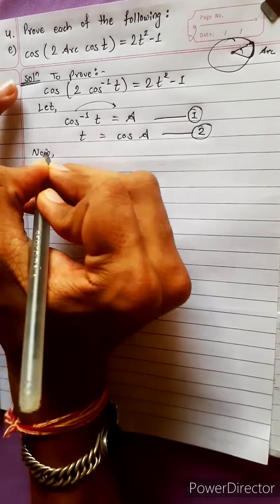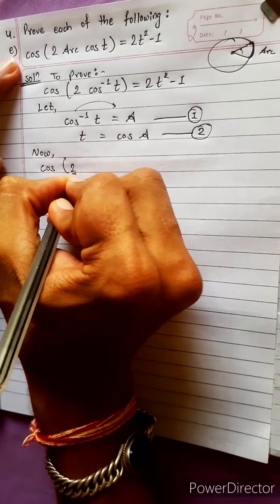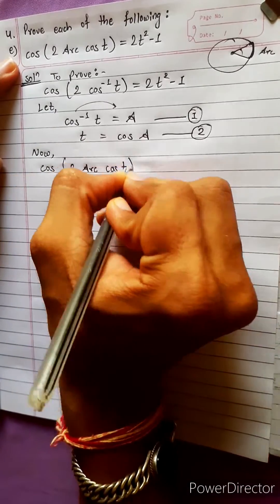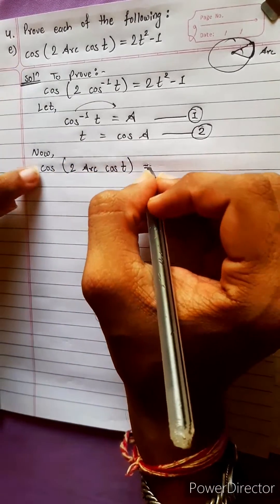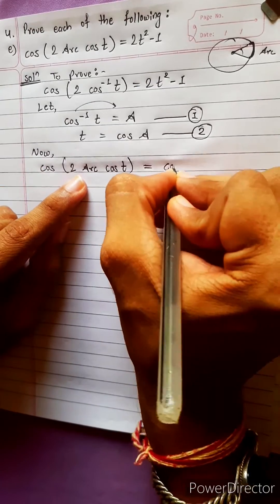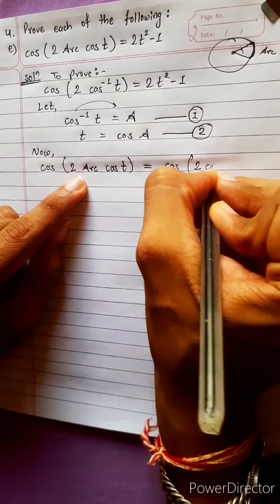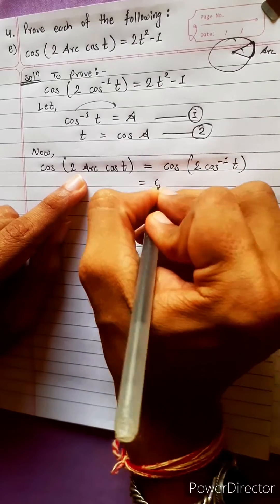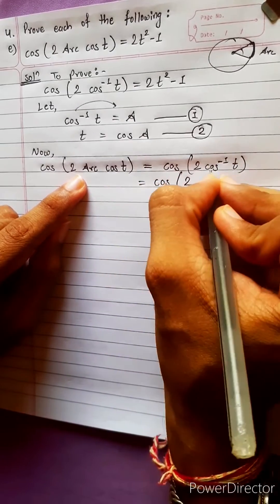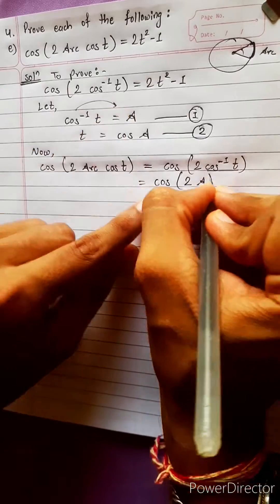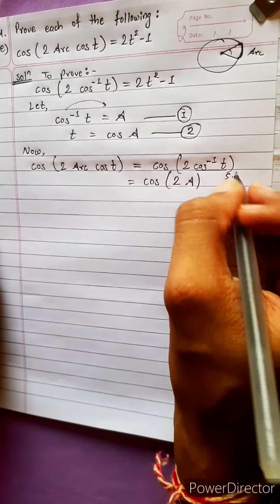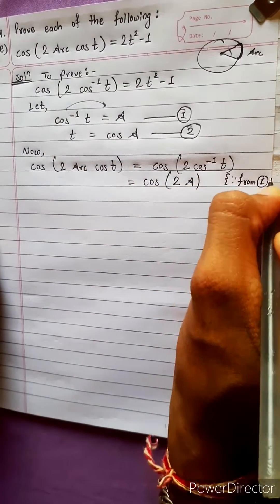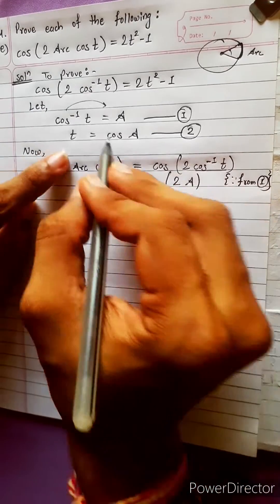Now, according to the question: cos 2 arc cos t, which is cos 2 cos inverse t. From equation 1, we can write this.